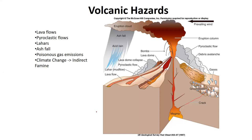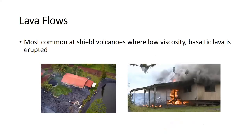The hazards of volcanism include lava flows, pyroclastic flows, lahars, ash fall, poisonous gas emissions, and climate change — and part of climate change is indirect famine. Some of these we discussed in the previous lecture, but we're going to look at them a little bit more in this lecture.